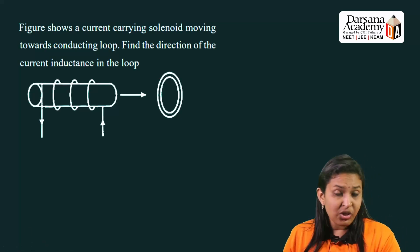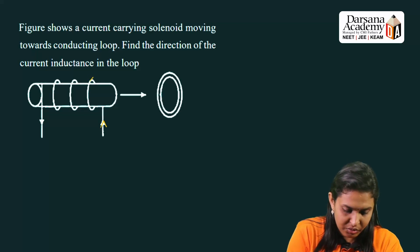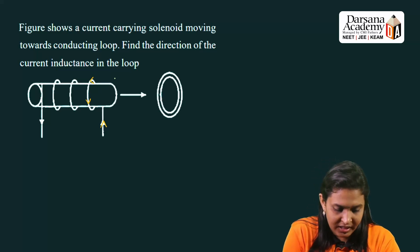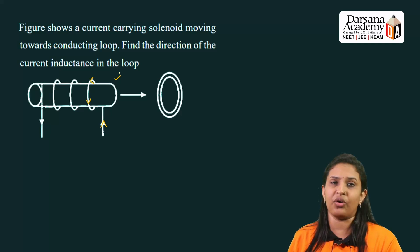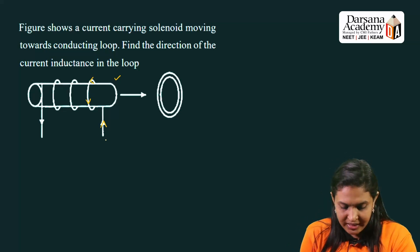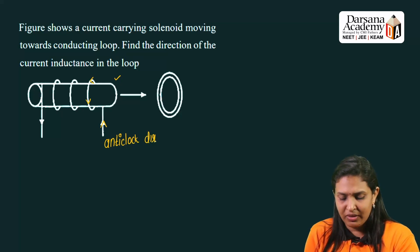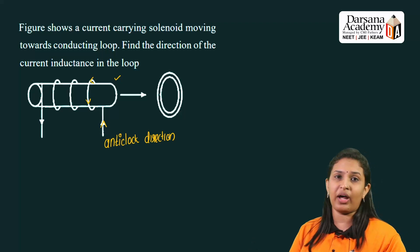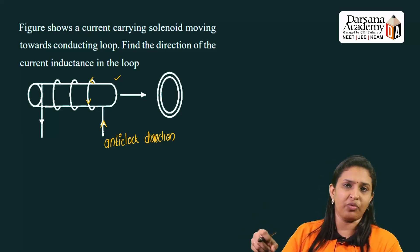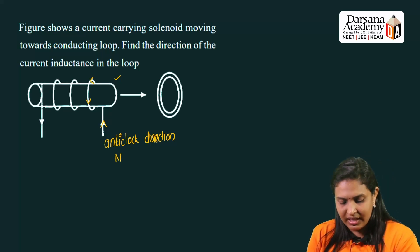There is a current-carrying solenoid. You can see the arrow showing current moving in that coil. The current in the solenoid is anti-clockwise. An anti-clockwise current creates a north pole — as we learned in the moving charges and magnetism chapter. So here, the current is anti-clockwise, and this creates a north pole.